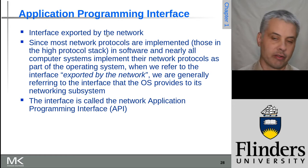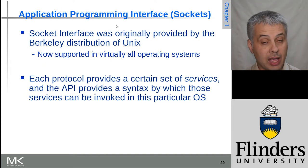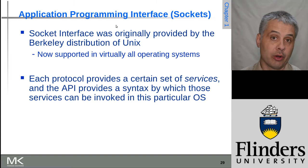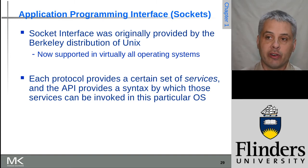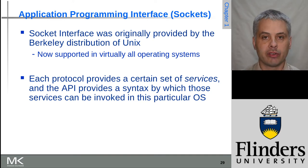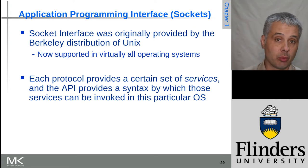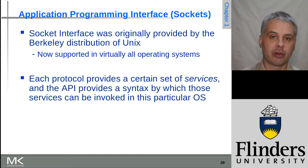You've probably already heard about APIs. Now we're going to look at the Socket API for networking, because this is really the most common one you'll find. It originated back in early versions of Unix in the 1970s and 1980s, and now practically every operating system supports it — even ones with very different heritage. Windows, for example, has supported a Socket API for a long time.